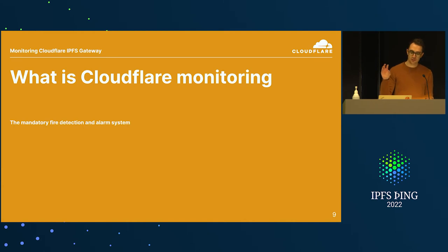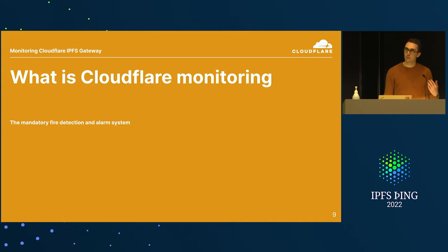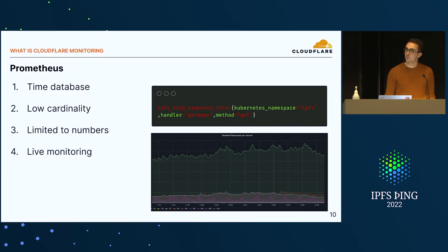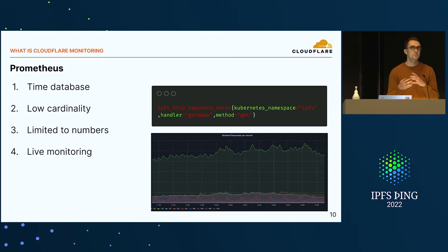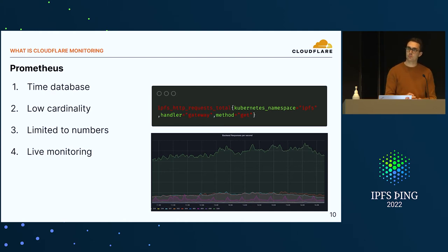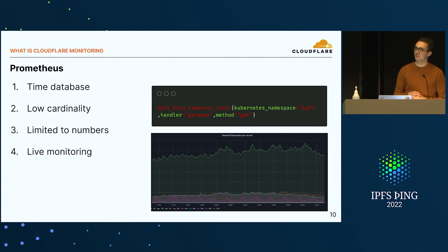Looking at monitoring — which is mandatory from an operational perspective — you need to understand if your gateway starts answering in 10 seconds instead of less than a second, and you need tools to debug live issues in content routing. The first tool I'll mention is Prometheus, a time-series database. One particularity is that you can only have low cardinality in Prometheus, so you don't tend to have a lot of tagging context, but it's very useful for easily following and tracking metrics over time. It's limited to numbers, but really good for live monitoring.